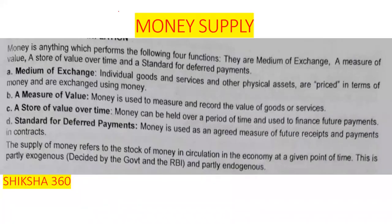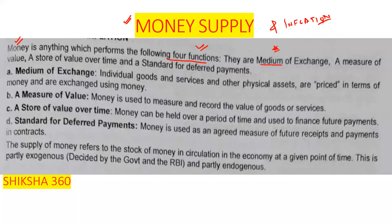Now, chapter three: money supply and inflation. What is money? Money is anything which performs the following four functions: medium of exchange, a measure of value, a store of value over time, and a standard for deferred payments. The supply of money refers to the stock of money in circulation in the economy at a given point of time, and this is partially exogenous and partially endogenous — decided by the government and the RBI.